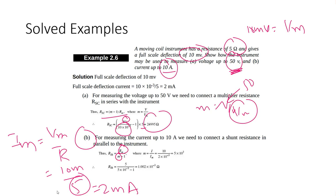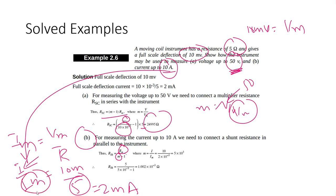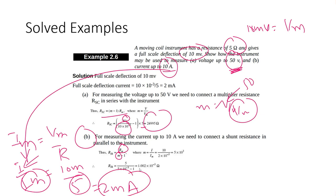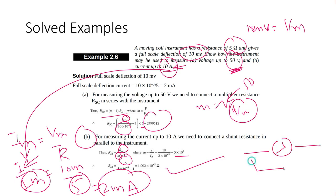For the ammeter, m = I/Im where I is the desired full-scale current of 10 amperes and Im is 2 milliampere. So m = 10 divided by 2×10⁻³. Using Rs = Rm divided by (m minus 1), Rs turns out to be 1×10⁻³ ohm.